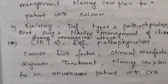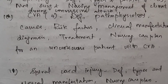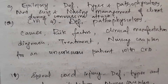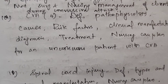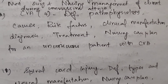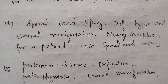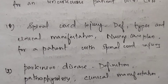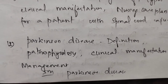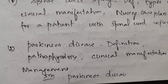Nursing management of a client during a convulsive attack. Next, CVA — cerebrovascular accident — appears four times, covering definition, pathophysiology, causes, risk factors, clinical manifestation, diagnosis, treatment, and nursing care plan for an unconscious patient with CVA. Spinal cord injury: definition, types, clinical manifestation, nursing care plan. Parkinsonism disease: definition, pathophysiology, clinical manifestation, and management — the same question in 5 marks.